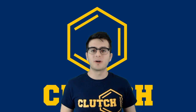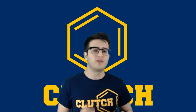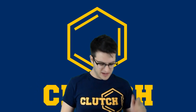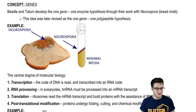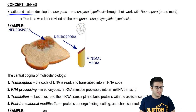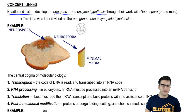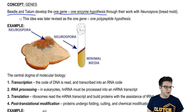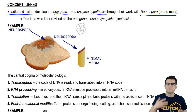In this video we're going to talk about genes and take a look at how you go from a gene to a protein. Let's first start by talking about the famous experiment by Beadle and Tatum that led to the development of the one gene, one enzyme hypothesis. They conducted this experiment with Neurospora, or bread mold.